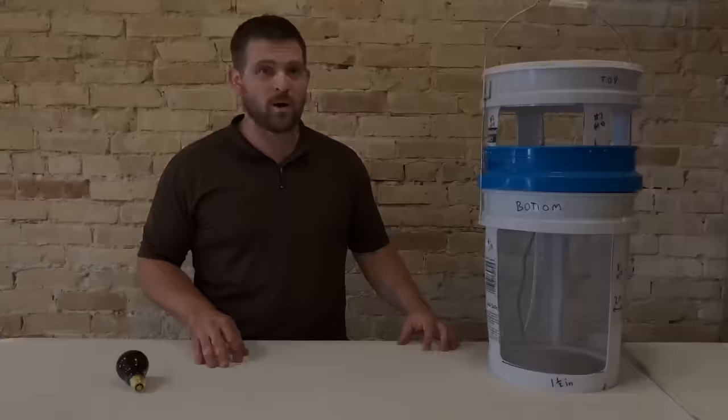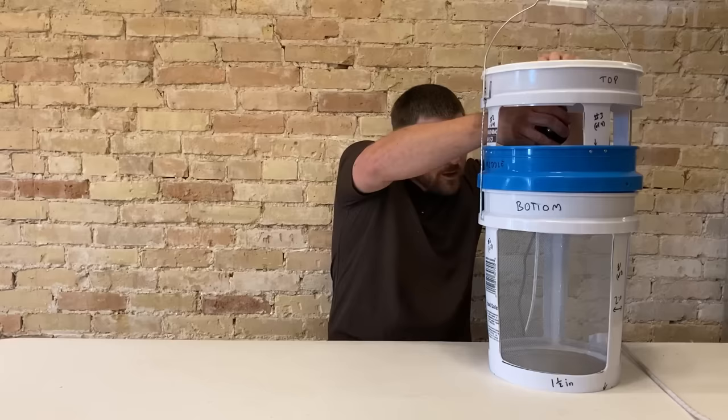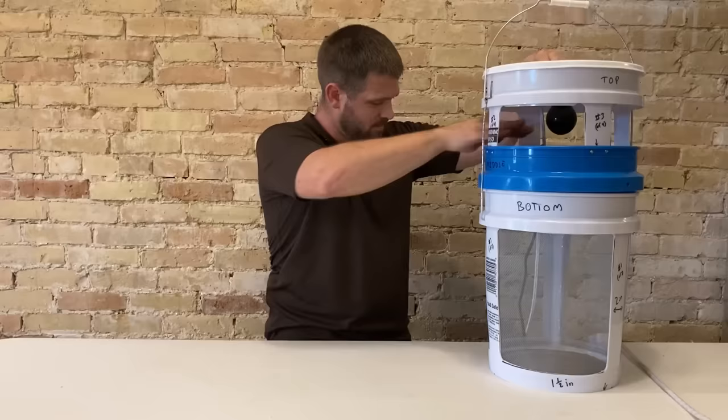That's about it. You've got your top, middle, bottom pail all assembled together with the latches. The only thing we have left to do is to install our light bulb. Reach in, twist it into the lamp base, and all we have to do is plug it in. If you've made it this far, you've got a homemade mosquito trap.